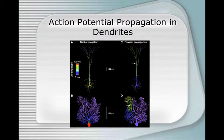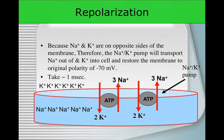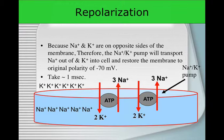For repolarization, because sodium and potassium are now on opposite sides of the membrane from where they started, the sodium-potassium pump transports sodium out and potassium in, restoring the membrane to its original polarity. This takes around one millisecond — these pumps work fast. Using ATP, they pump two potassium in and three sodium out per cycle.